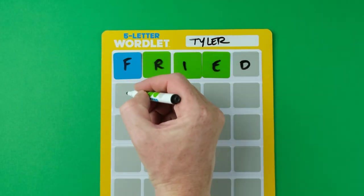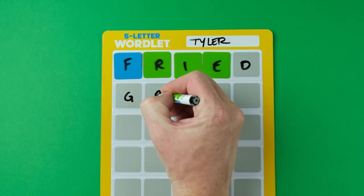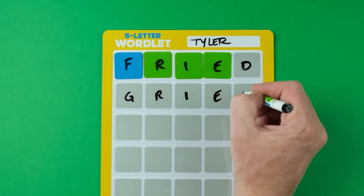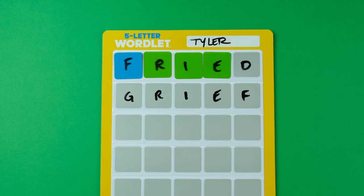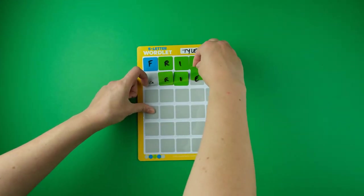Once the board is returned, word guessers review the placement of the answer chips and write their next guesses in the preceding line on their guessing board. Once the word guessers write down their next guess, they immediately pass their guessing board back to the word master for review.